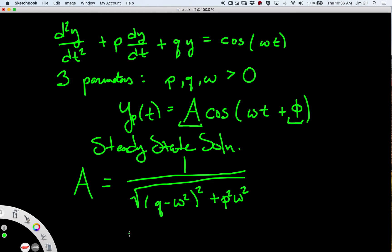Similarly we can write what phi is. I'm not going to write what phi is; I'm going to write what the tangent of phi is. The tangent of phi can be shown to be negative p omega divided by q minus omega squared—put that in parentheses, make sure that we see we're dividing by that whole quantity.